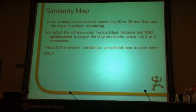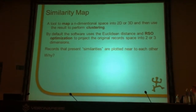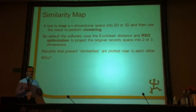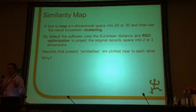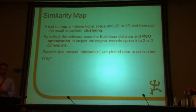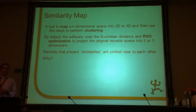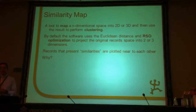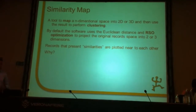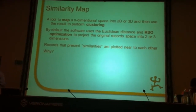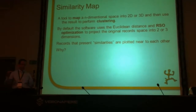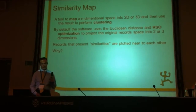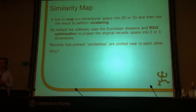Let me come to the second topic: the similarity map. Of course, we didn't invent the idea. The idea is very old. You start from items which can be very high-dimensional — think about text mining, you can have literally 100,000 dimensions, so 7 is nothing. What can help is to take each item and map it onto a 2 or 3 dimensional space, particularly 2D because screens are 2-dimensional.